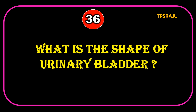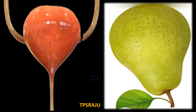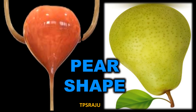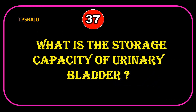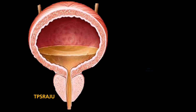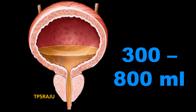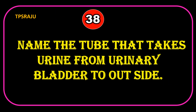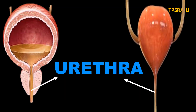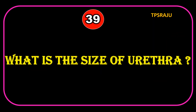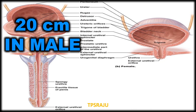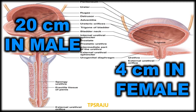What is the shape of the urinary bladder? What is the storage capacity of the urinary bladder? Which vessel carries urine from the urinary bladder to the outside? Urethra. What is the size of the urethra? 20 cm in male, 4 cm in female.